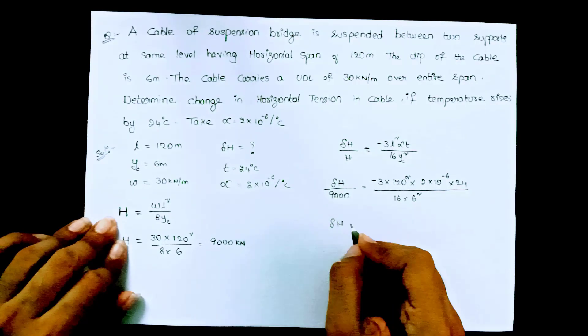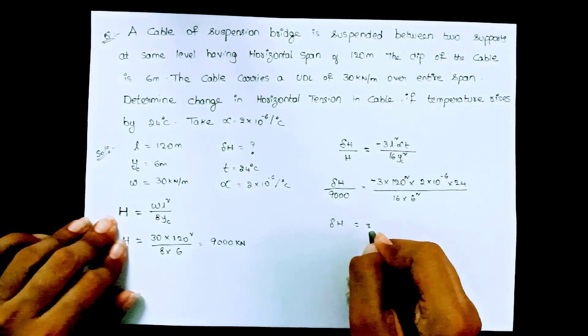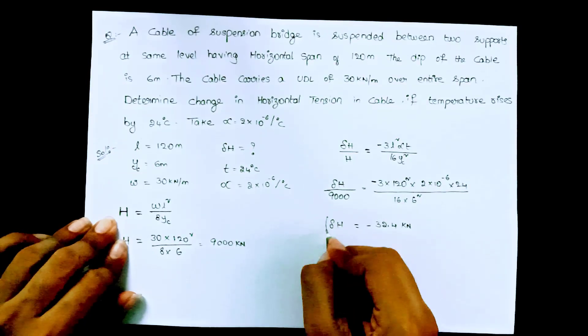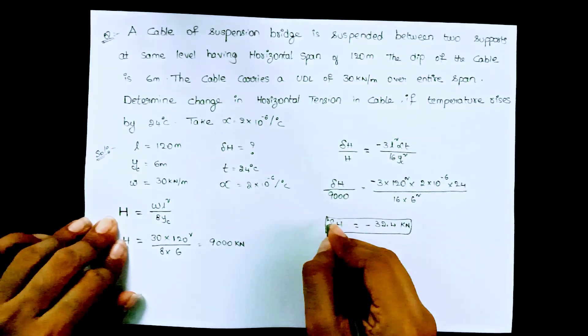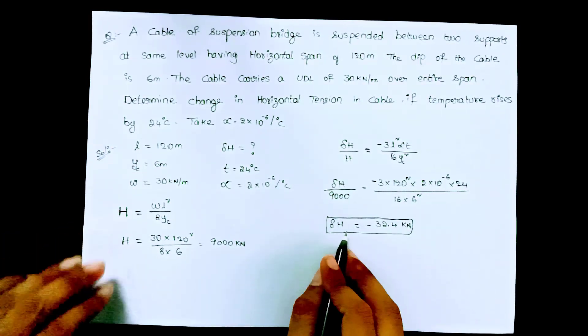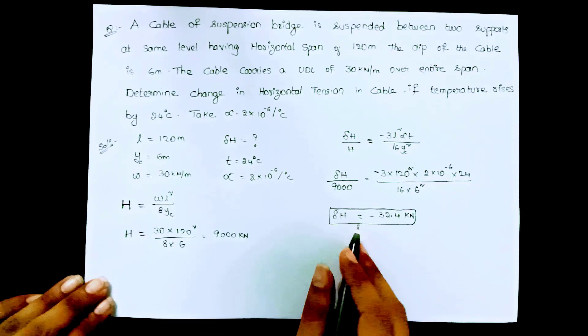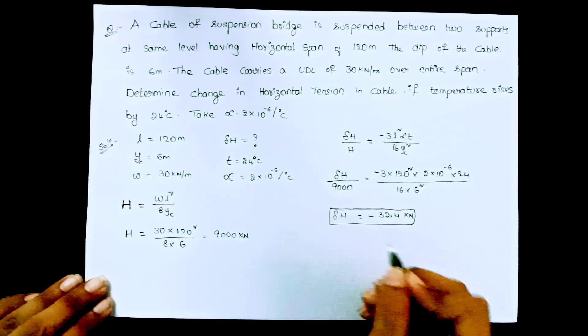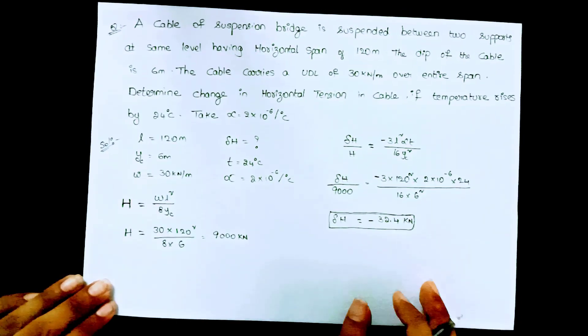So delta h from this you can get delta h equal to minus 32.4 kilonewton. This is the change in horizontal tension when it is subjected to a temperature rise of 24 degrees Celsius. The negative sign represents the reduction in horizontal tension.